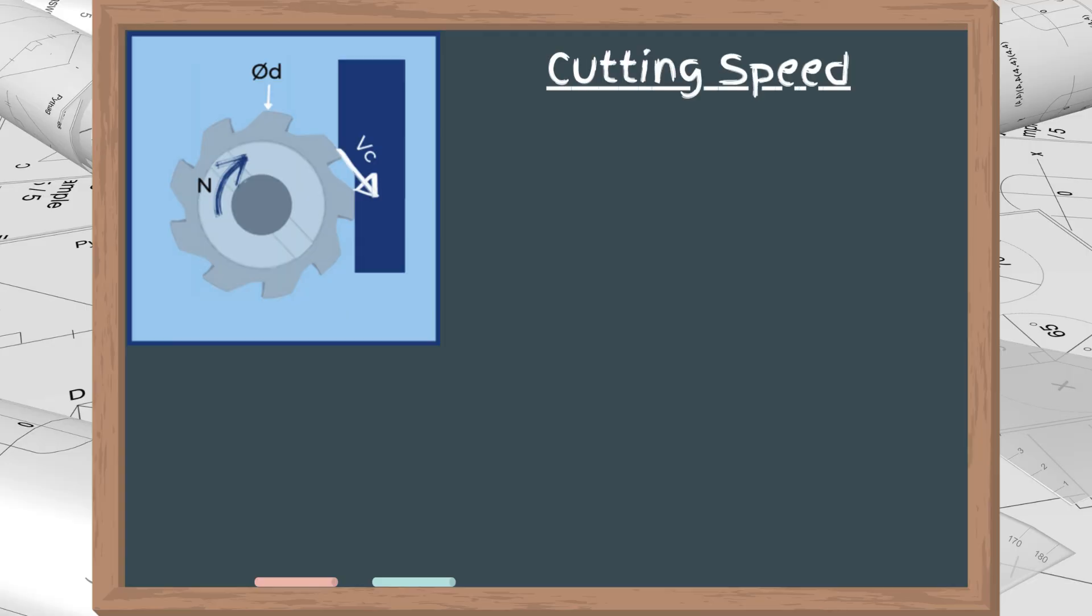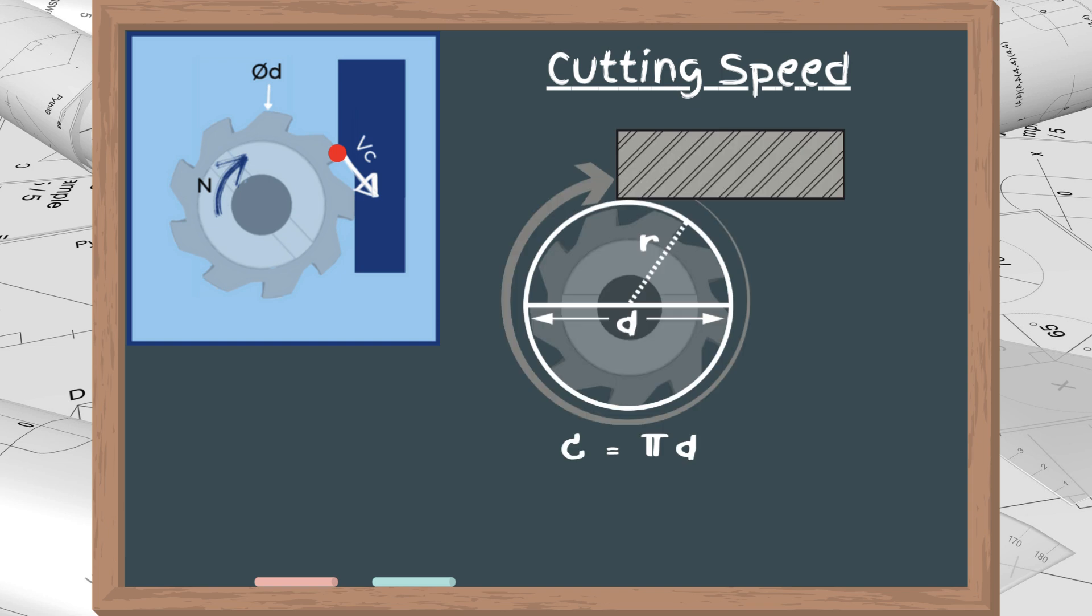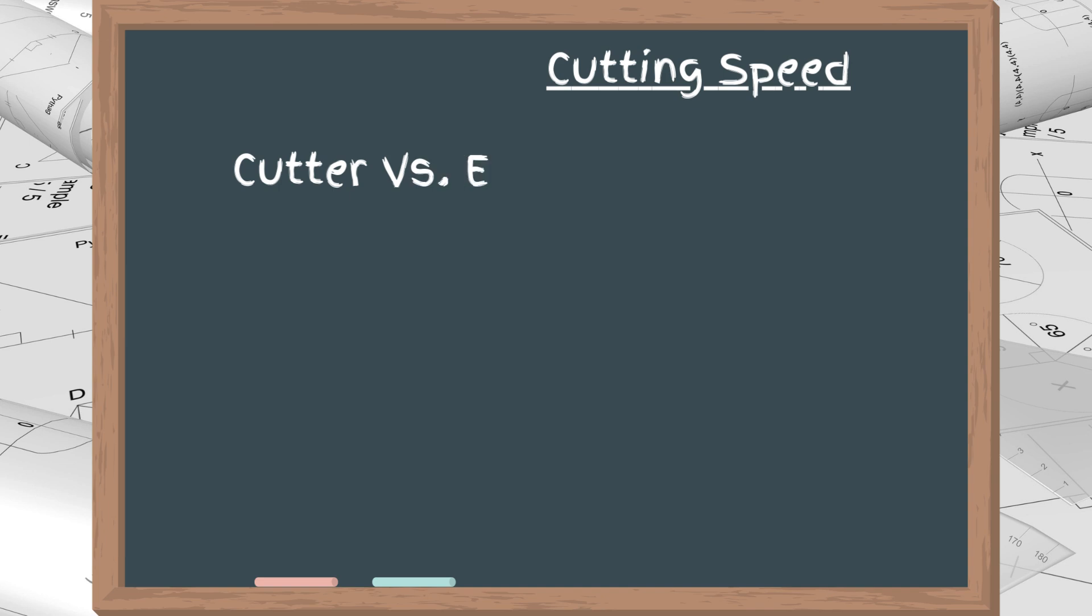Let's start with cutting speed. Cutting speed is the relative linear velocity between the tip of the milling cutter and the workpiece. It is the product of the rotation speed of the tool, which is the spindle speed, by the circumference of the tool. Since the circumference equals pi times the diameter, the formula for Vc is n times pi times d. Pay attention to the fact that the diameter in the formulas should be the effective diameter, and not the cutter diameter.